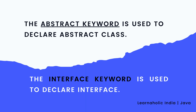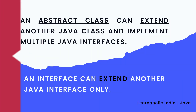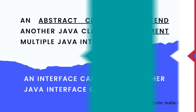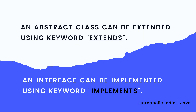Fifth, the abstract keyword is used to declare abstract class, whereas the interface keyword is used to declare interface. Sixth, an abstract class can extend another Java class and implement multiple Java interfaces, whereas an interface can extend another Java interface only. Seventh, an abstract class can be extended using the keyword extends, whereas an interface can be implemented using the keyword implements.